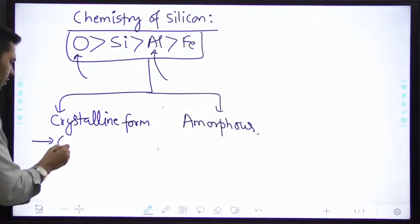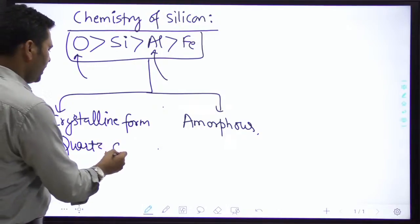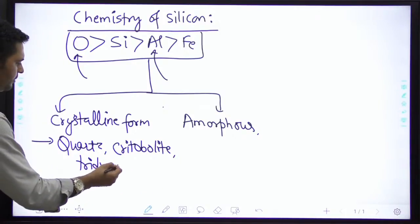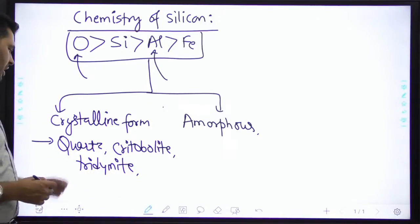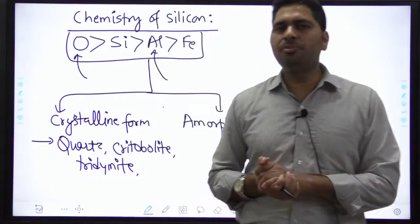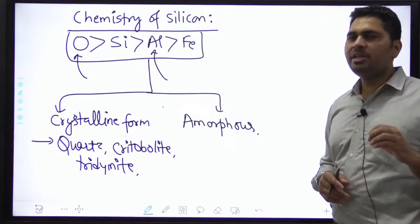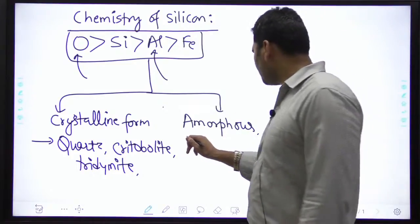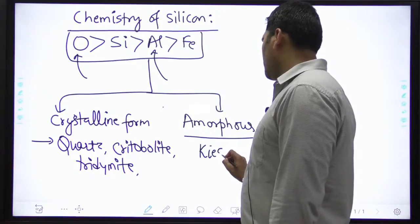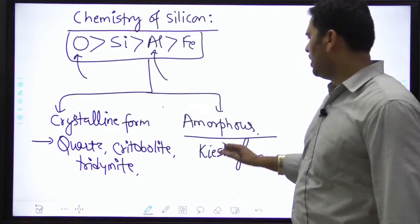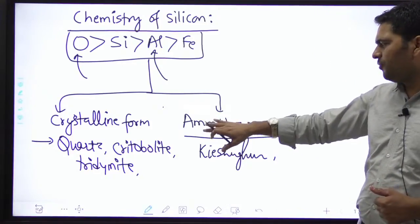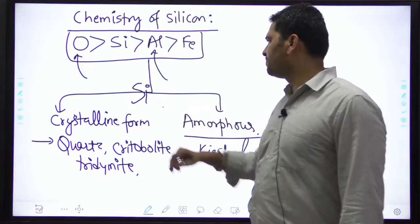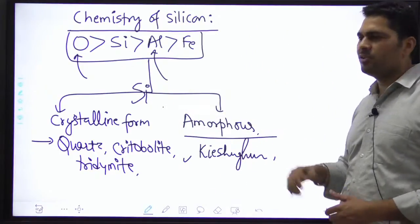Crystalline form ki teen varieties hoti hain: quartz, cristobalite, aur tridymite. Amorphous form mein orderly arrangement nahi hota. Amorphous forms hain: castle ghur (kieselguhr) aur silica gel. IIT mein yeh question aa chuka hai ki silicon ki amorphous form kaun si hoti hai — silica gel bhi amorphous form hota hai.